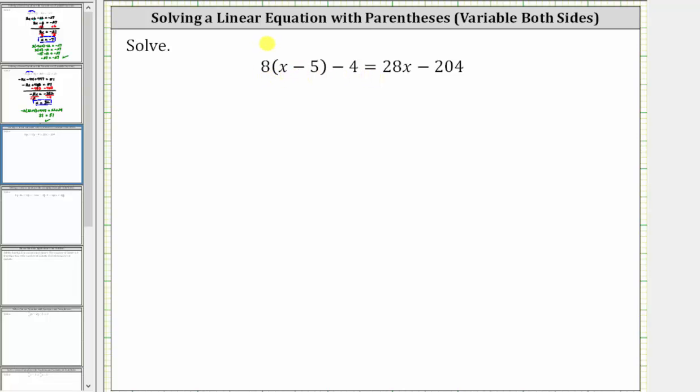To clear the parentheses, we distribute eight. Distributing eight, we have eight times x, which is 8x, minus eight times five, which gives us minus 40. Then we have minus four equals 28x minus 204.